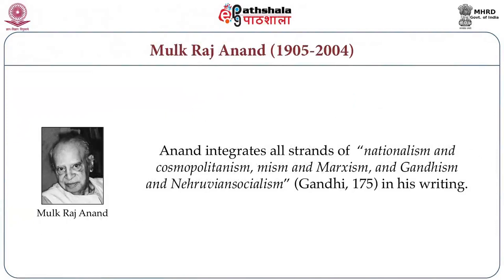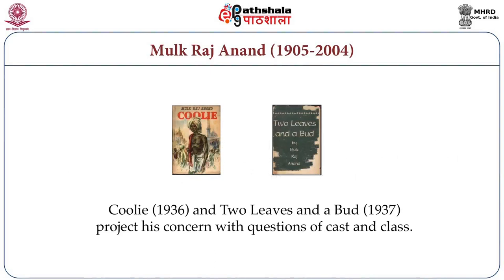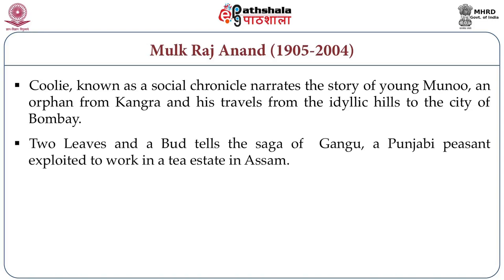Anand integrates all strands of nationalism, cosmopolitanism, Marxism, Gandhism and Nehruvian Socialism in his writing. His first novel, Untouchable, published in 1935, narrates the story of Bakha, a young sweeper who is ostracized. Coolie, published in 1936, and Two Leaves and a Bud, published in 1937, project his concern with questions of caste and class. Coolie, known as a social chronicle, narrates the story of young Munoo, an orphan from Kangra and his travels from the idyllic hills to the city of Bombay. Two Leaves and a Bud tells the saga of Kangali, a Punjabi peasant exploited to work in a tea estate in Assam.